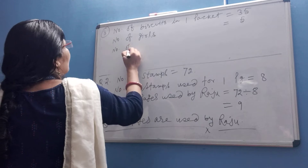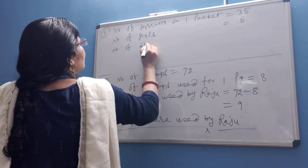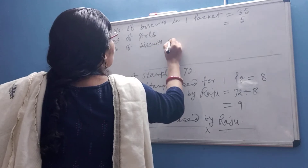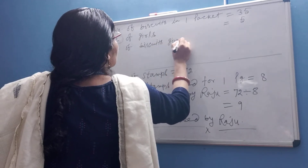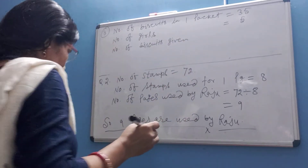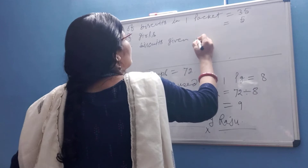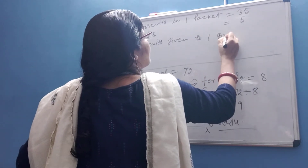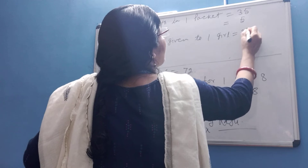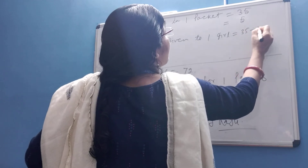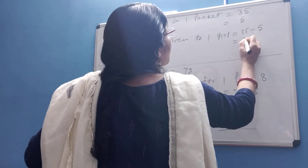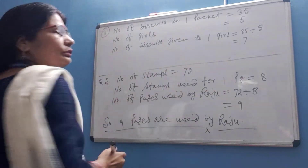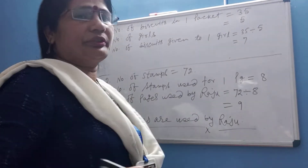The number of biscuits given to one girl is equal to 35 divided by 5 is equal to 7. So, one girl has 7 biscuits.